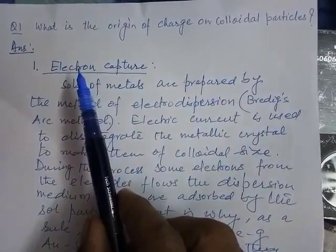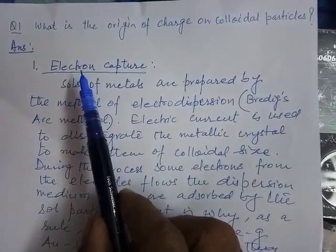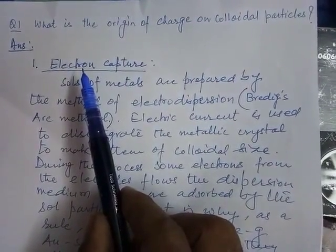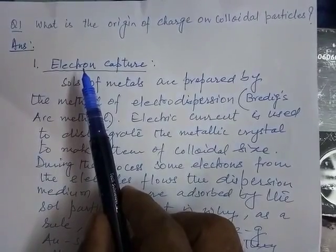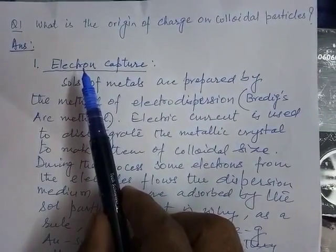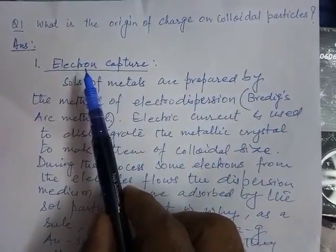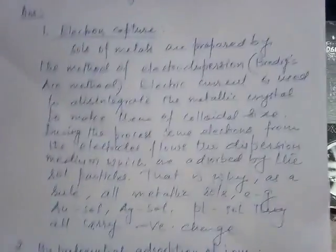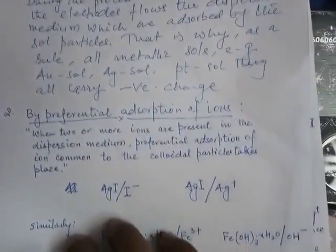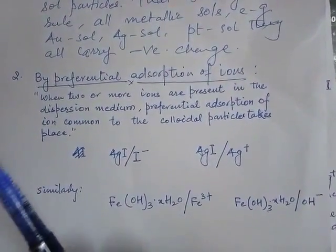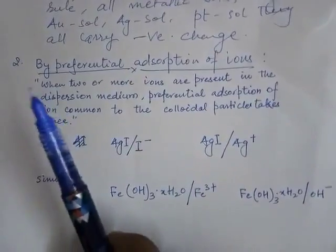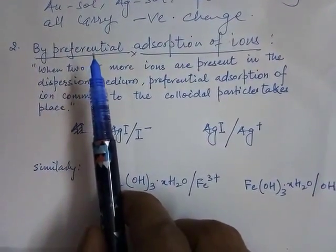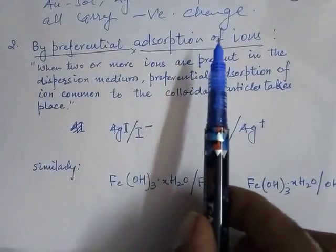The first reason for charge on colloidal particles — electron capture — was already discussed in the previous session. Now the second most important reason for charge present on colloidal particles is by preferential adsorption of ions from the solution.